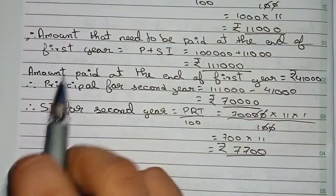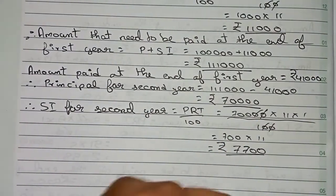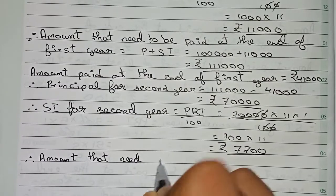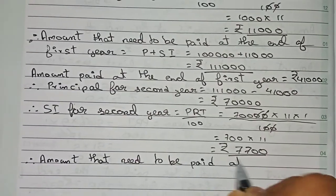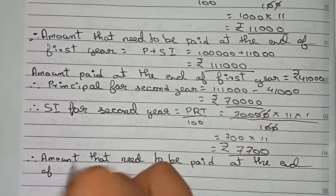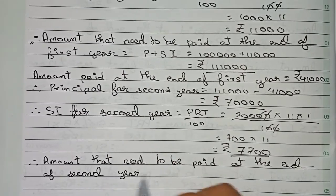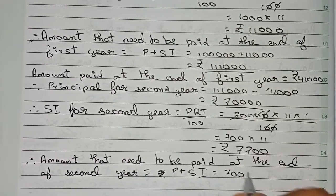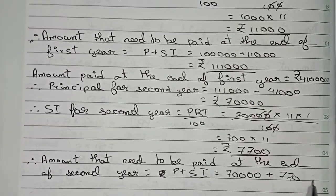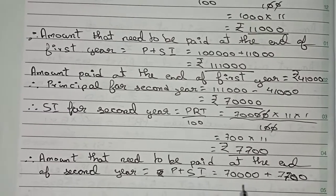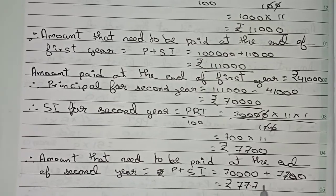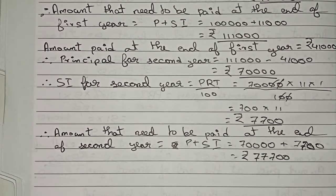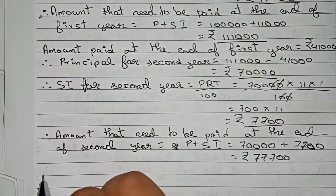Now, the amount that needs to be paid at the end of the second year is principal plus SI. The principal is 70,000 plus SI of 7,700, which equals rupees 77,700. This is the total amount to be paid at the end of the second year. In the question, it is given that rupees 47,700 is paid at the end of the second year.